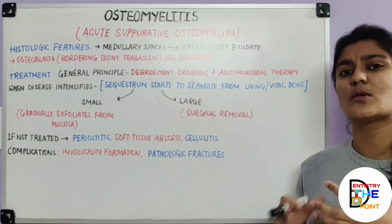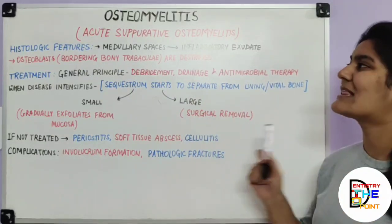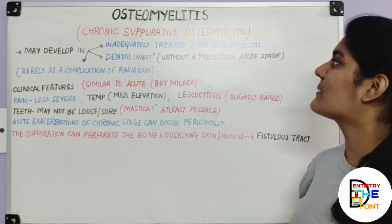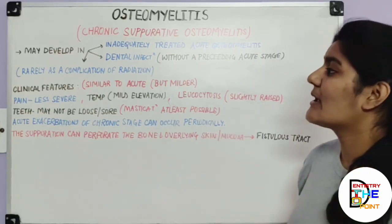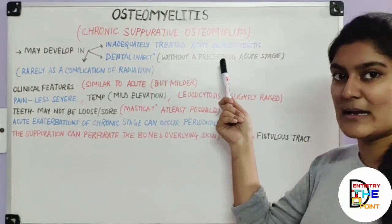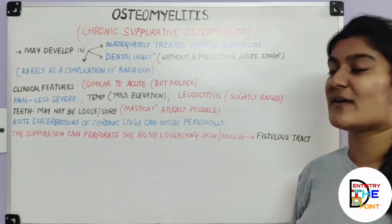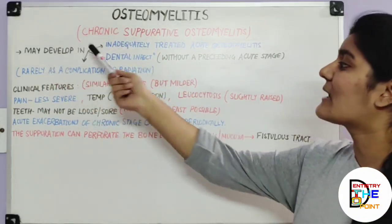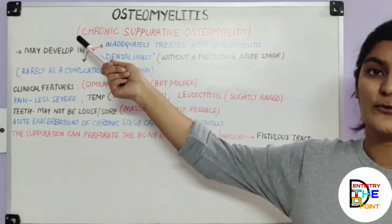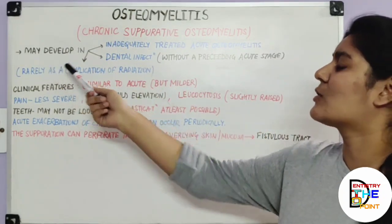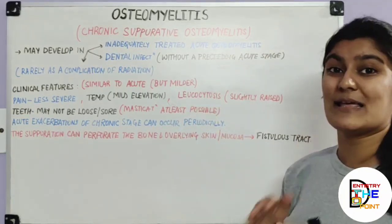Now moving to chronic suppurative osteomyelitis. It is similar to the acute form in many ways. It may develop in inadequately treated acute osteomyelitis or may arise from dental infection without a preceding acute stage. Rarely, it is a complication of irradiation or radiation.